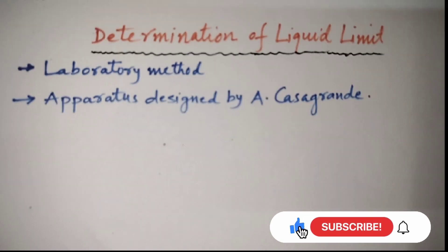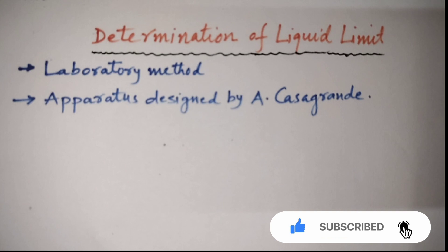Till now, we have just learned about the consistency of soil, the different stages, the definition of liquid limit, plastic limit and shrinkage limit. Now, come to the main topic of this video that is determination of these limits. First, we will learn about determination of liquid limit.